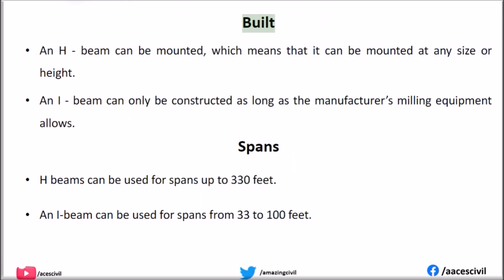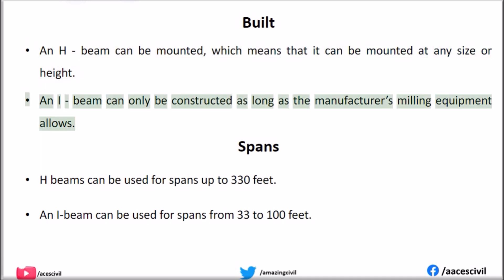Built. An H-beam can be fabricated, which means that it can be assembled at any size or height. An I-beam can only be constructed as long as the manufacturer's milling equipment allows.